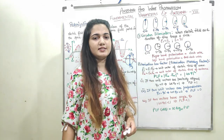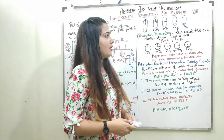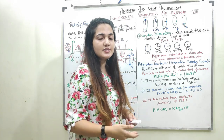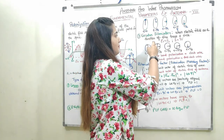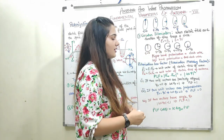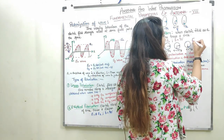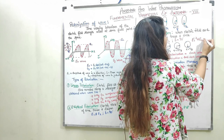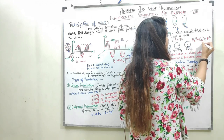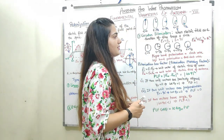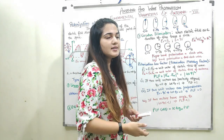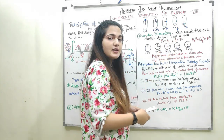The third type is circular polarization, where the electric field as a function of time traces a circle. The equation of a circle is: E1² + E2² = R², which becomes Ex² + Ey² = R². For circular polarization, E1 must equal E2 and the phase angle must be 90 degrees.